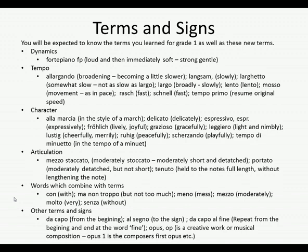Tempo — this talks about the speed of your piece. We need to know: allargando, which means broadening or becoming a little slower. Langsam, which means slowly. Larghetto — somewhat slow, but not as slow as largo. Largo means broadly and slowly. Lento also means slowly. Mosso, which means movement or pace. Rasch means fast. Schnell also means fast. Tempo primo means resume the original speed.